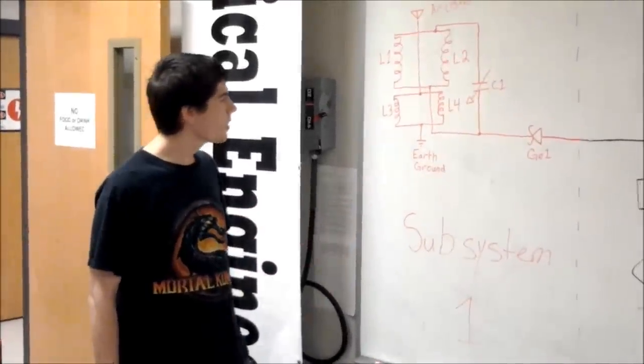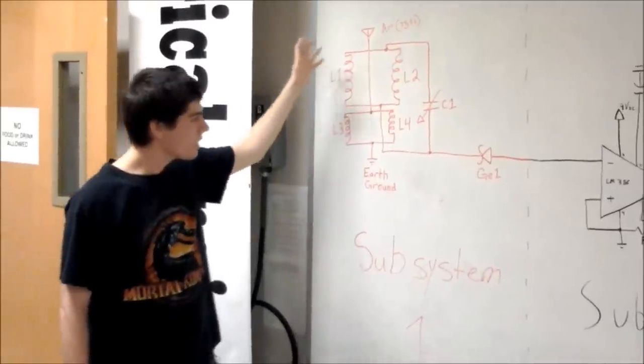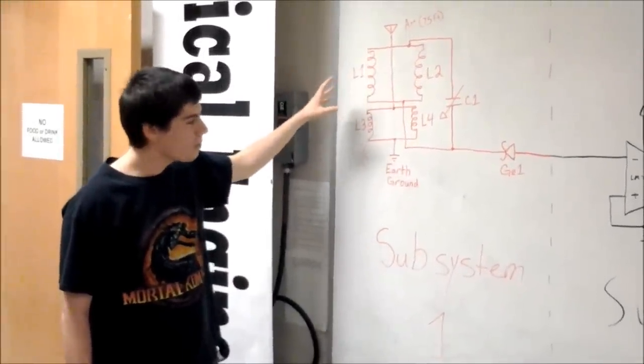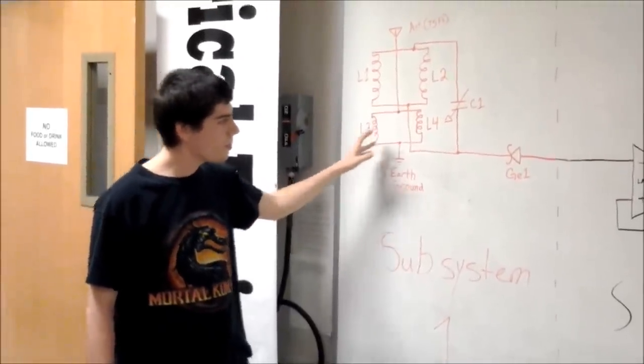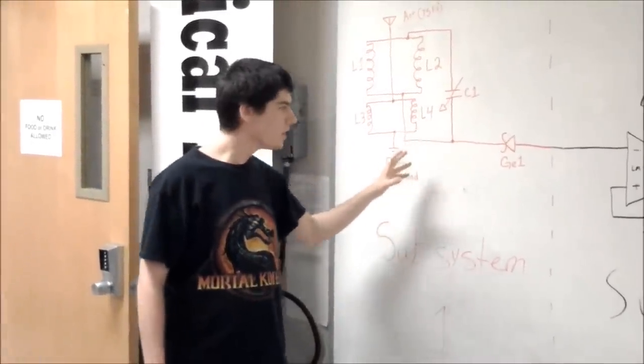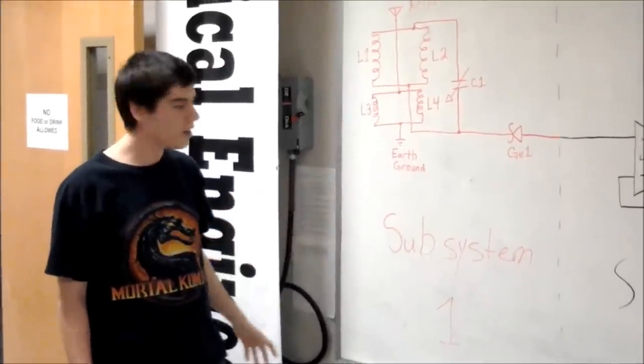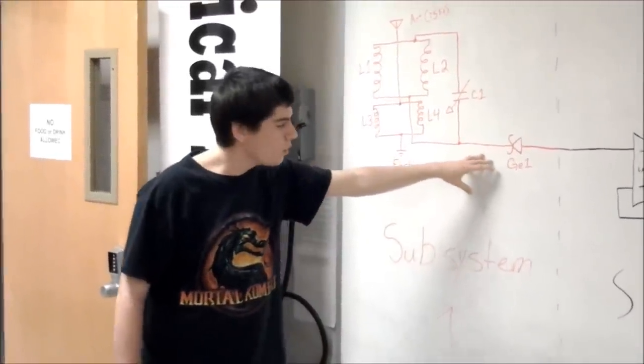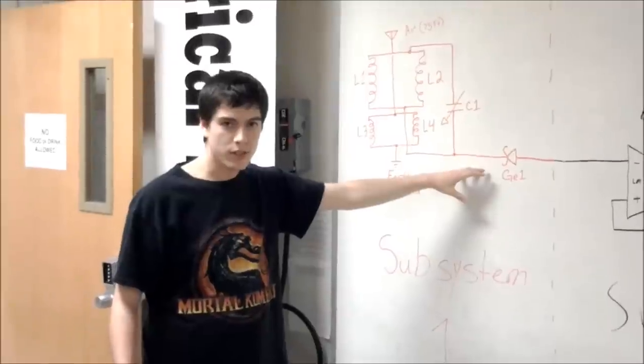This is subsystem one of our receiver. Our signal is coming in through our 75 foot antenna which is then going to two inductors in parallel with our primary and secondary windings which are then in parallel with our variable capacitor. This allows us to tune the circuit properly so that we can pick up the one megahertz frequency that we want. Then we have a germanium diode which allows the current to flow in only one direction so that our average power will not be zero.